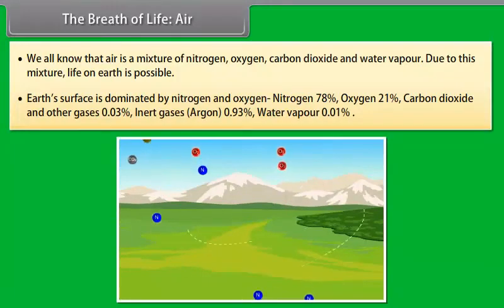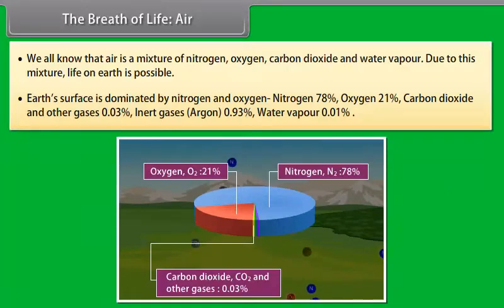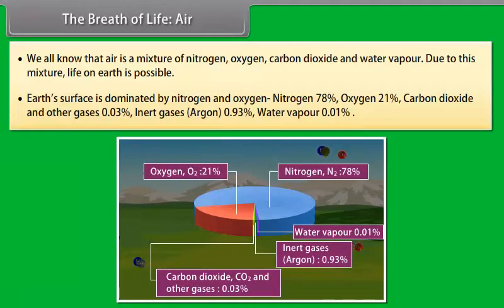Earth's surface is dominated by nitrogen and oxygen. Nitrogen 78%, oxygen 21%, carbon dioxide and other gases 0.03%, inert gases argon 0.93%, water vapor 0.01%.